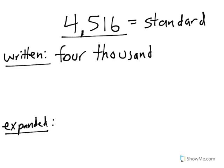When there is a comma in the number, there is also a comma in the written form. Now, all that we have left are these three digits, 516. So, I'm going to write five hundred sixteen.